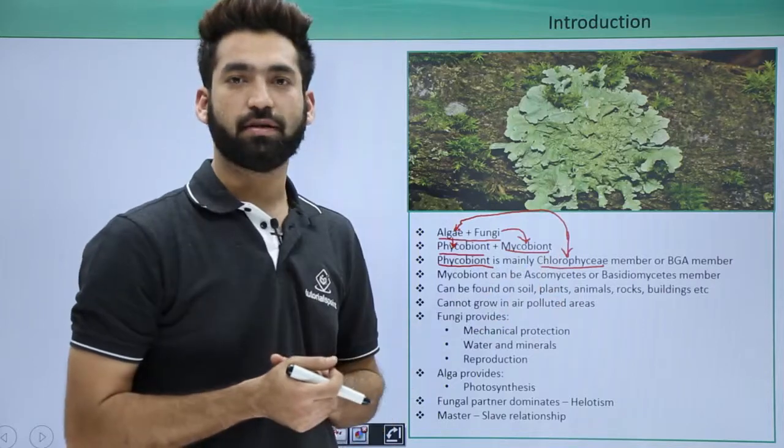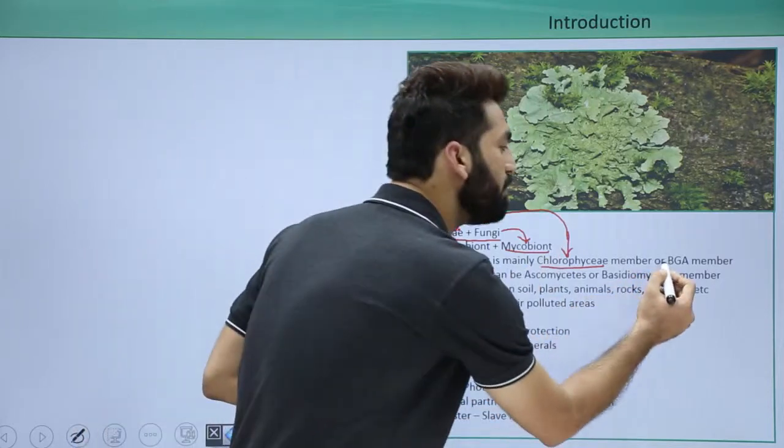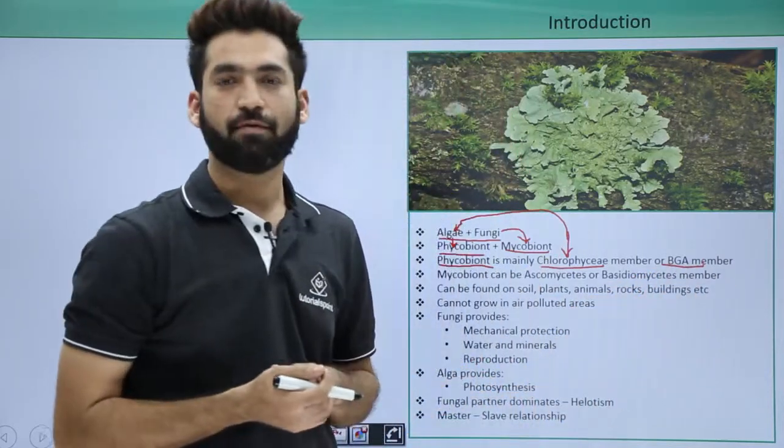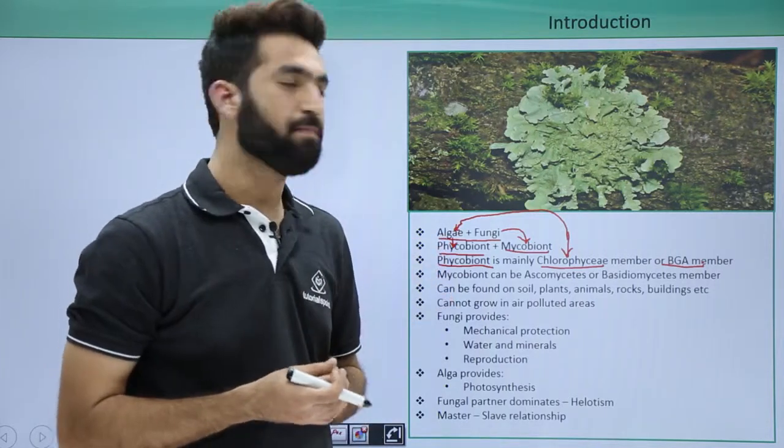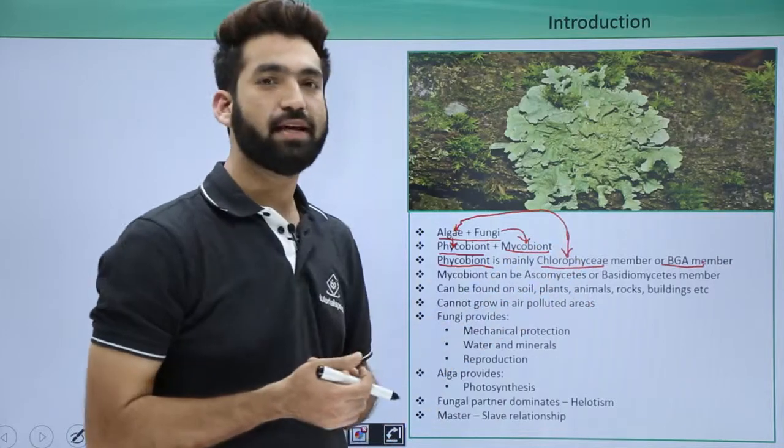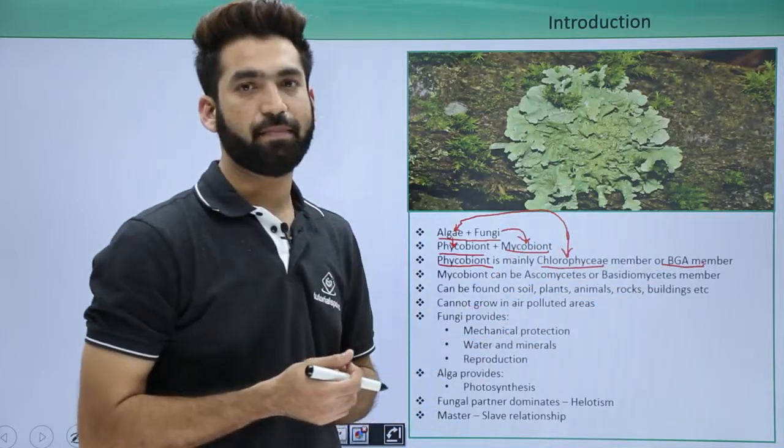So algae are basically the members of Chlorophyceae or they can be the member of BGA also. BGA I have already told you about cyanobacteria. So always remember phycobiont, it means the algae partner can be of Chlorophyceae or it can be of BGA.